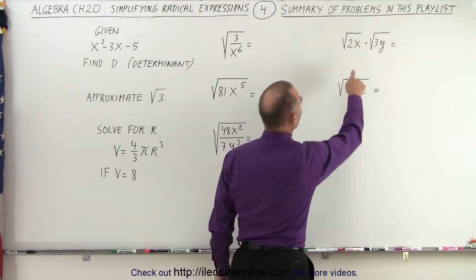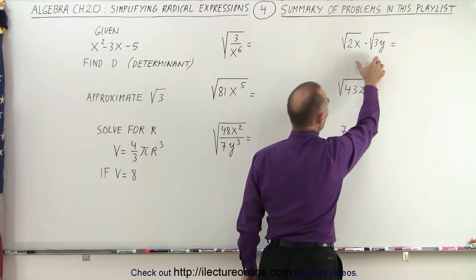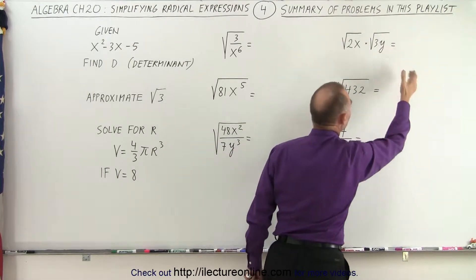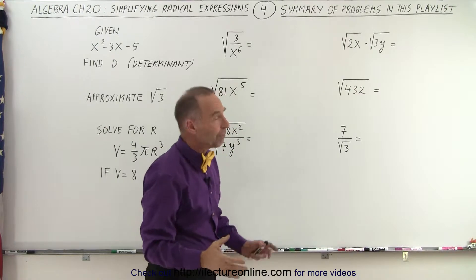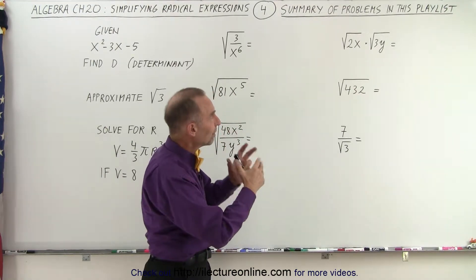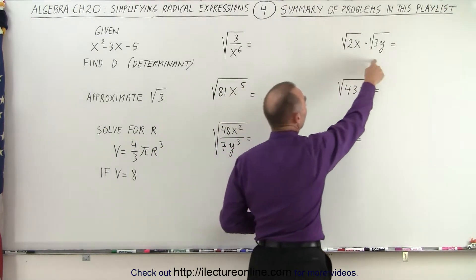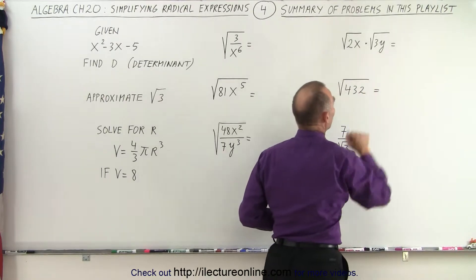We have the square root of 2x times the square root of 3y, and how do we rewrite that? How do we simplify that? So typically we want to combine the two if we cannot simplify each one of them separately, and then we'll see what we end up with.